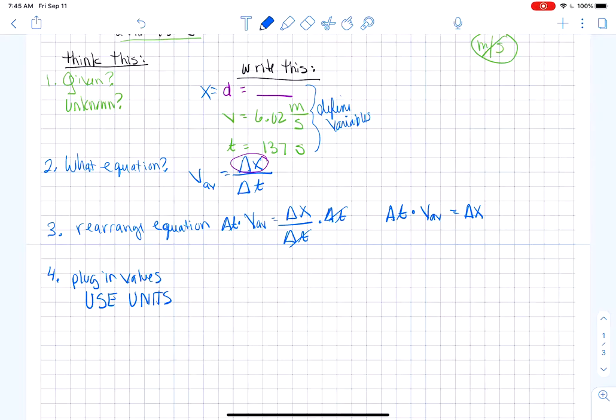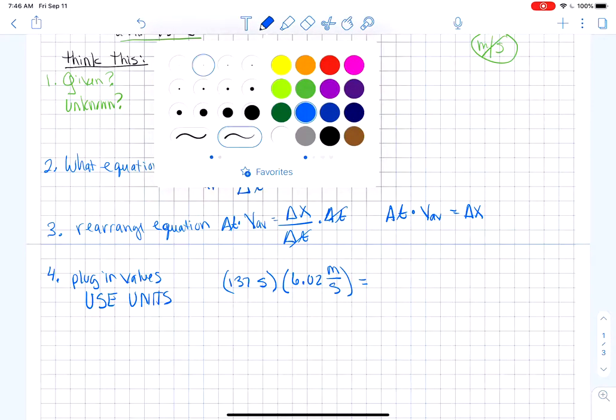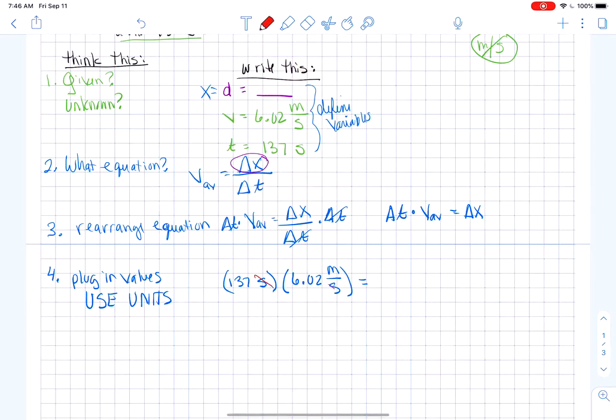So our time from our list of givens, which we conveniently chose already. So we're going to write 137 seconds. And we're going to multiply that by our velocity, which is 6.02 meters over seconds. And the reason you did that is so you can conveniently see that the seconds will cancel. You're left in units of meters, which is exactly what you want for a displacement.